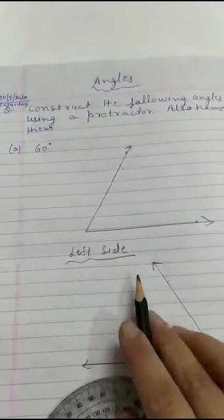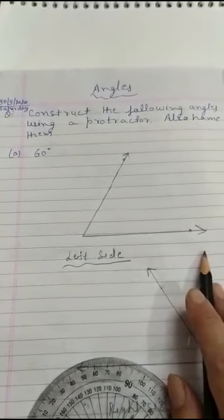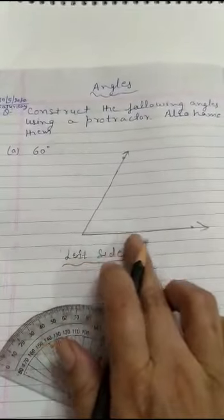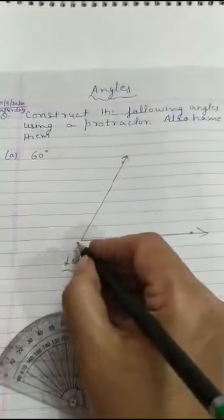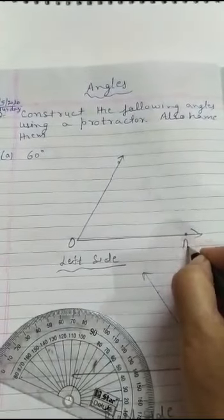When we go to higher classes, we will make both angles. We will make both sides. First, we have made a ray. We have made it named O-A. We have made a ray. We have placed the protractor at the center.